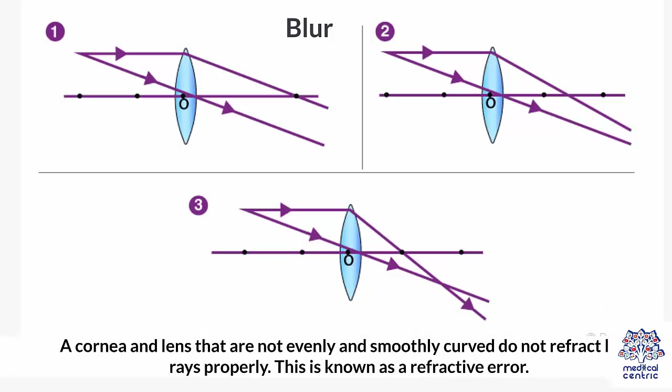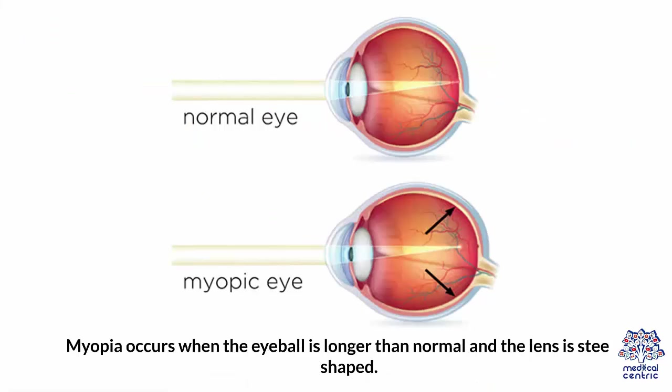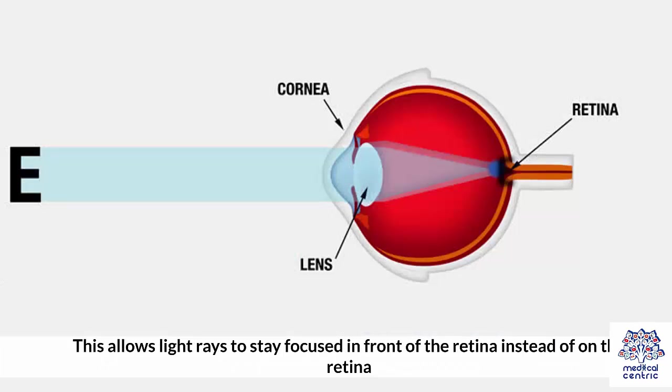A cornea and lens that are not evenly and smoothly curved do not refract light rays properly. This is known as a refractive error. Myopia occurs when the eyeball is longer than normal and the lens is steeply shaped, allowing light rays to stay focused in front of the retina instead of on the retina.